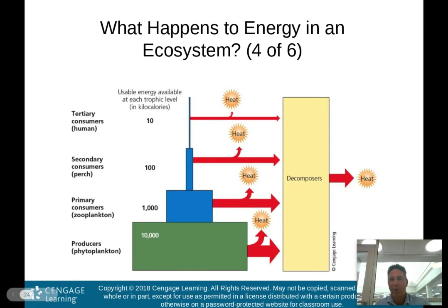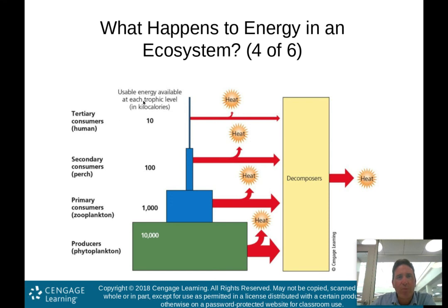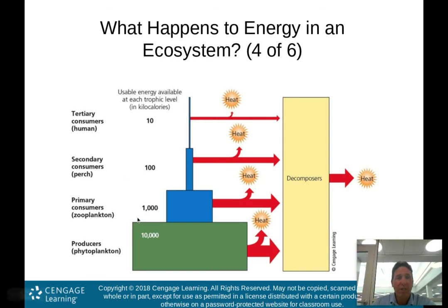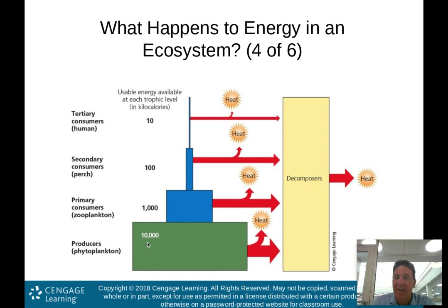This is a very important graph. Producers — like phytoplankton, algae that floats on water — take in high-quality energy from the sun and have about 10,000 kilocalories available. This is the usable energy at each trophic level in kilocalories. Then zooplankton, a primary consumer, comes in and eats the producer — and we lose 90% of that energy. This is what we call the 10% rule: only 10% of the energy available at the previous trophic level is available at the next.